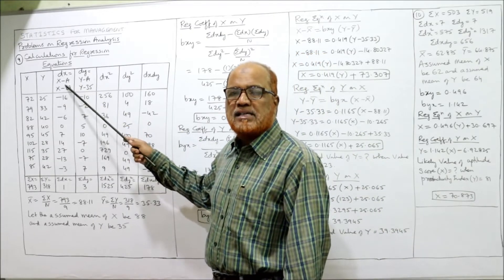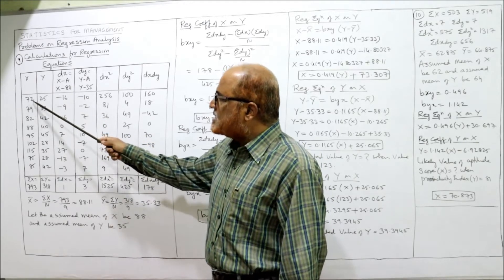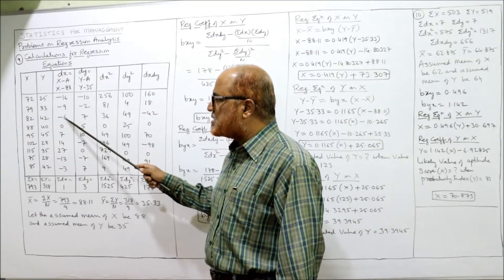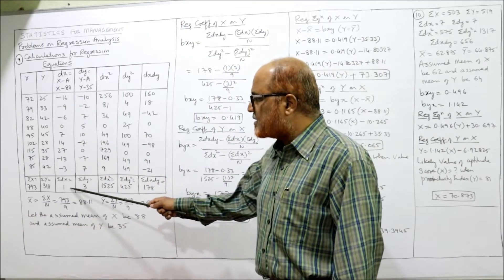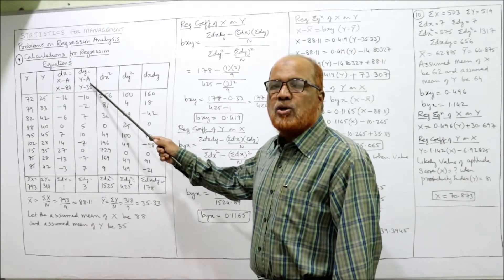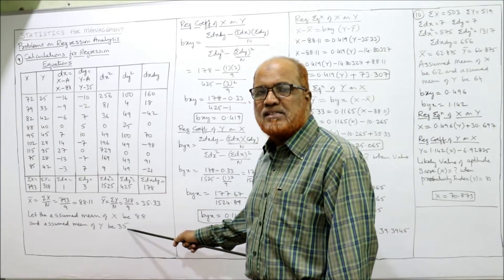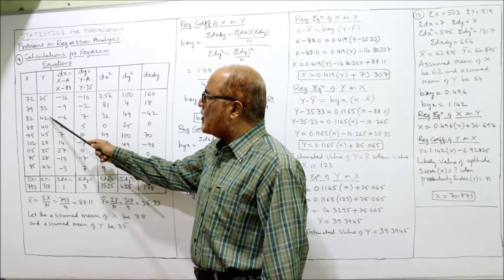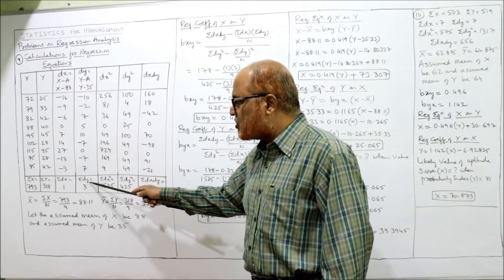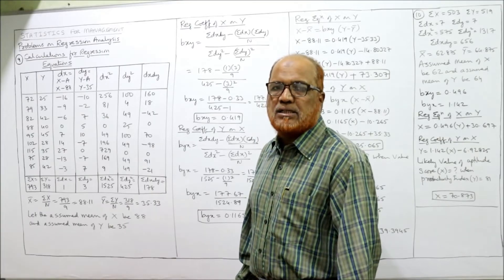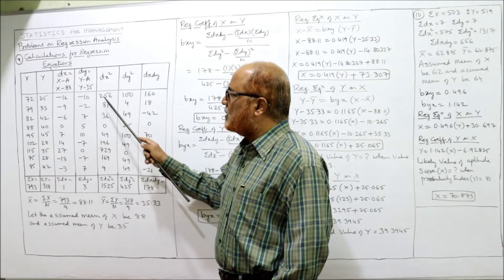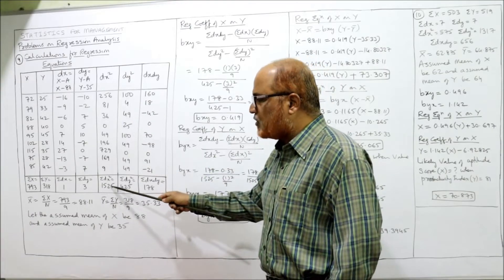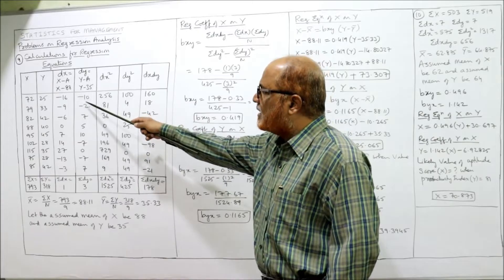dx = x − 88: so 72 − 88 = −16, 79 − 88 = −9, 82 − 88 = −6, and so on. Calculate all deviations; Σdx = 1. Similarly, dy = y − 35 (assumed mean of y series is 35): 25 − 35 = −10, 33 − 35 = −2, 42 − 35 = 7, and so on. Σdy = 3. Now square dx: 16² = 256, 9² = 81, 6² = 36, and so on. Σdx² = 1525.